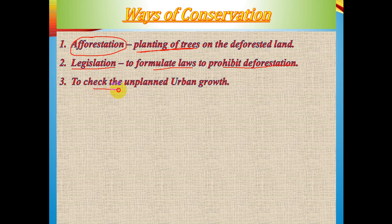The third way is to check unplanned urban growth. As population increases at an alarming rate, people grab forested areas for settlement, leading to unplanned growth that reduces forests. Controlling this unplanned urban expansion is essential to conserving forests.